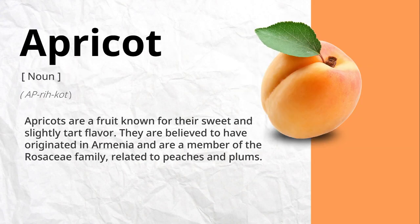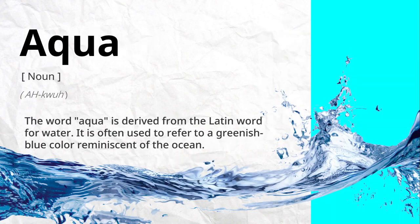Apricot. Apricots are a fruit known for their sweet and slightly tart flavor. They are believed to have originated in Armenia and are a member of the Rosaceae family, related to peaches and plums.